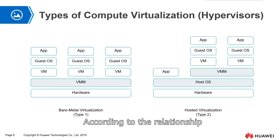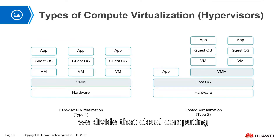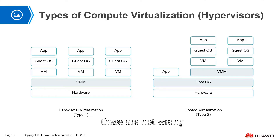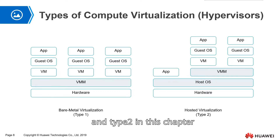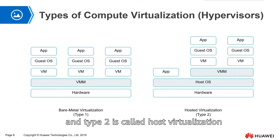According to the relationship between the host machine and the hypervisor, we divide cloud computing virtualization into two types. Some sources say three, four, or five types — those are not wrong — but in this chapter we only discuss type 1 and type 2 virtualization. Type 1 is called bare metal virtualization and type 2 is called host virtualization.